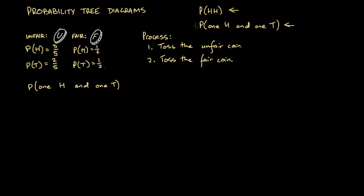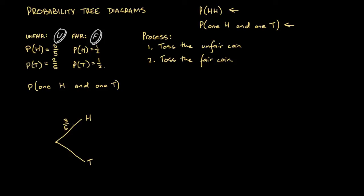Remember, similar to our earlier question, there are two ways to get one head and one tail: a head then a tail, or a tail then a head. The best way to handle this is to draw a probability tree. We draw a point and two branches from it, representing the two possible outcomes from tossing the unfair coin first — heads or tails. At the end of each branch we write the outcome, and on each branch we write the probability: 3/5 for heads and 2/5 for tails.